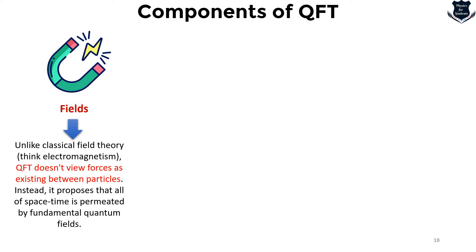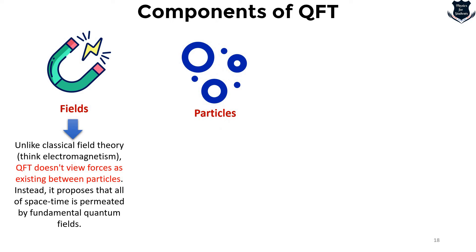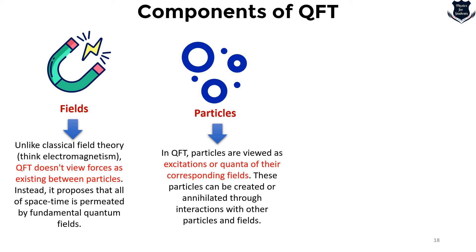The first important component — by the very name quantum field theory — are fields. QFT describes physical phenomena in terms of fields, which are mathematical objects that exist throughout space and time. These fields represent fundamental quantities such as the electromagnetic field, the electron field, the quark fields, etc. In QFT, particles are viewed as excitations or quanta of their corresponding fields, and can be created or annihilated through interaction with other particles and fields — described by Feynman diagrams.